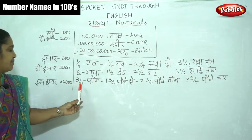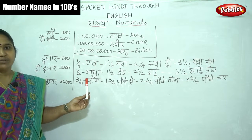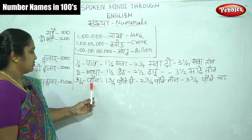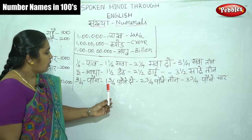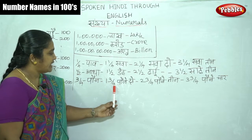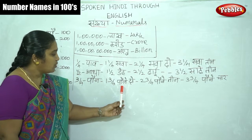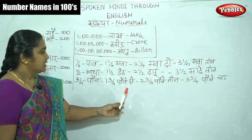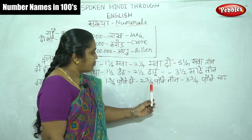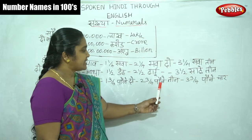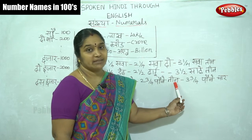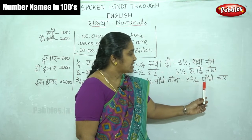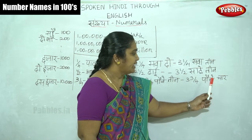For three by four — three-fourth — that is Paune. One and three-quarters is Paune Do, two and three-quarters is Paune Teen, three and three-quarters is Paune Chaar.